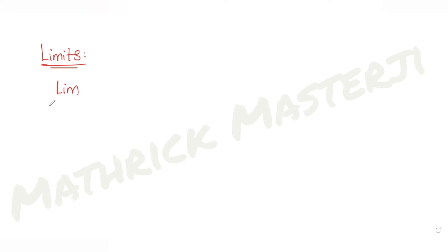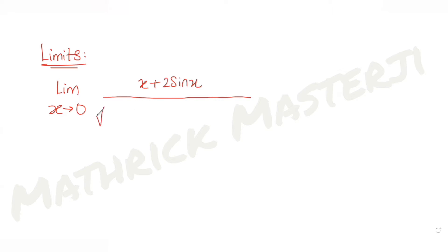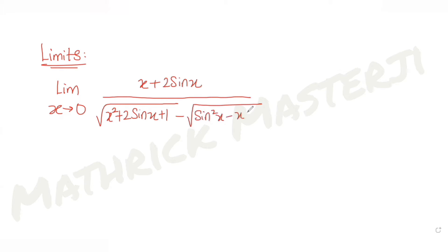Today's question is from the topic of limits. We need to find the limit as x tends to 0 of the expression: x plus 2 sin x in the numerator, and in the denominator we have the square root of x squared plus 2 sin x plus 1, minus the square root of sin squared x minus x plus 1.